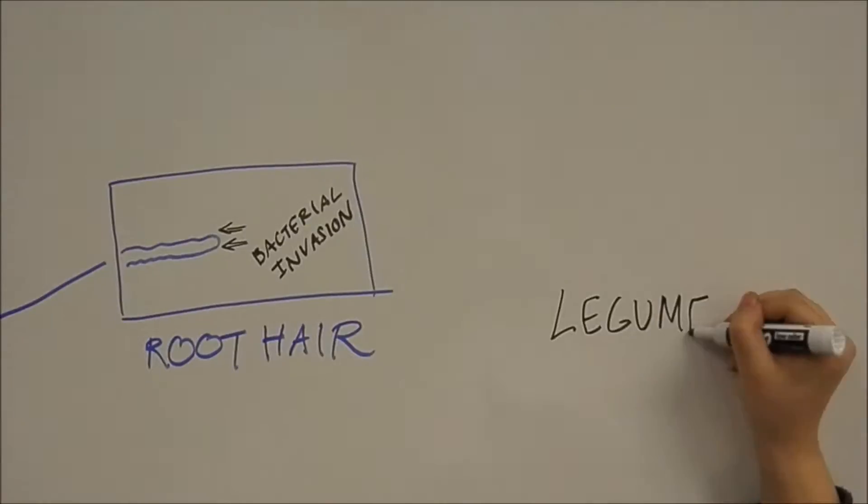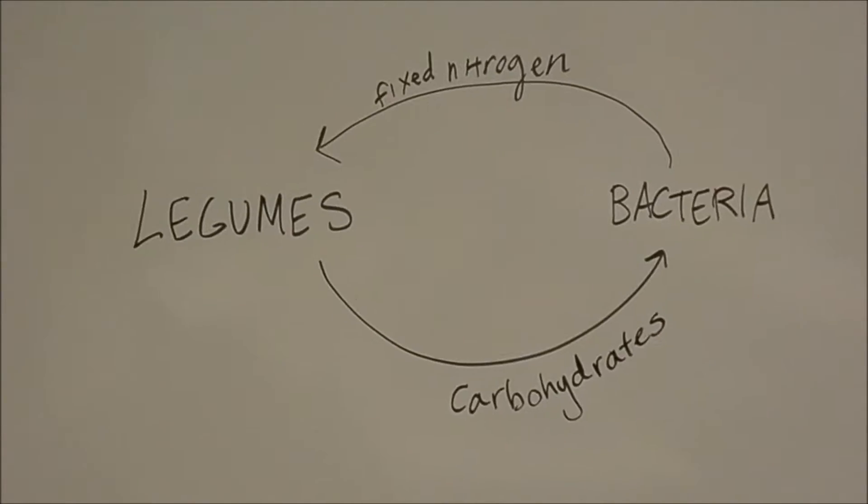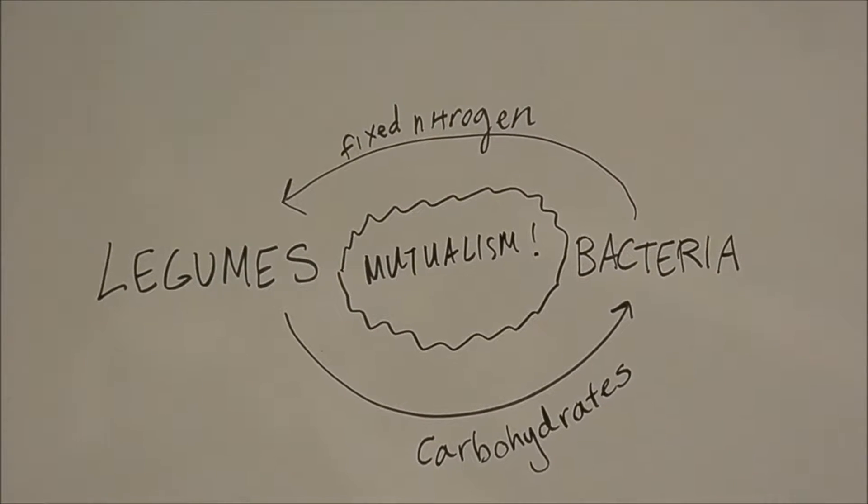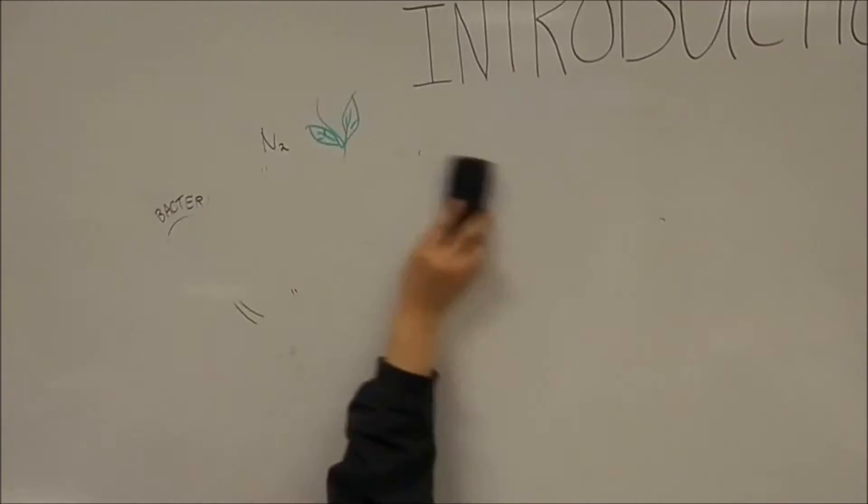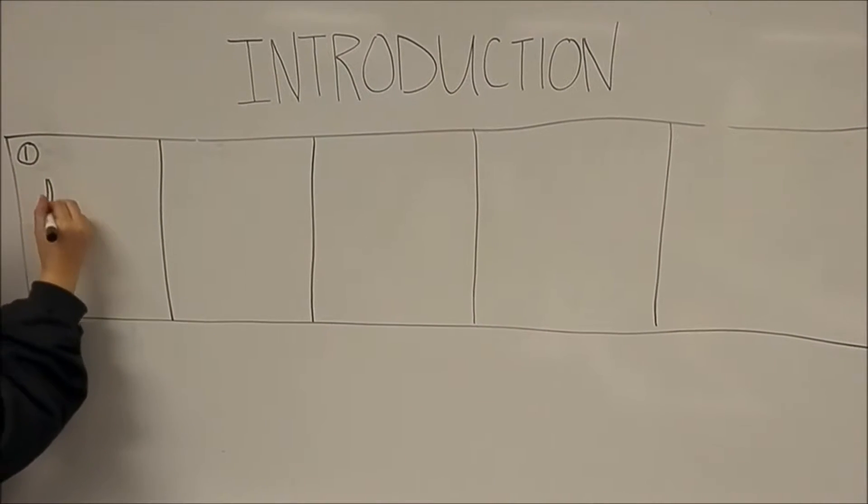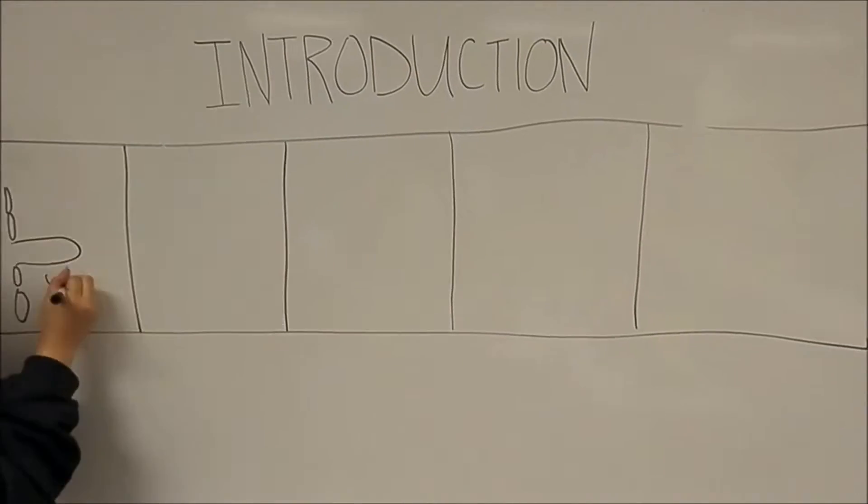Legumes and Rhizobia have a mutualistic relationship in which nitrogen-fixing bacteria provide the plant with ammonia while the legume provides the bacteria with carbohydrates and protection. So how do these bacteria take up residence inside the plant root cells? First, the plant's root hairs release flavonoids to attract the Rhizobia.